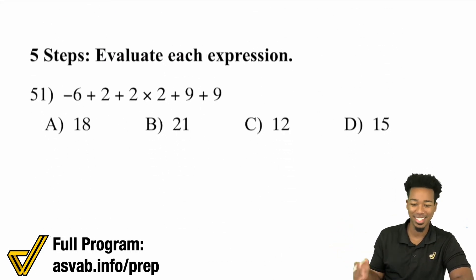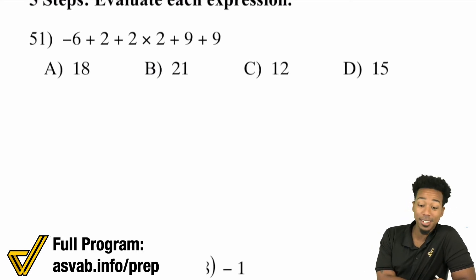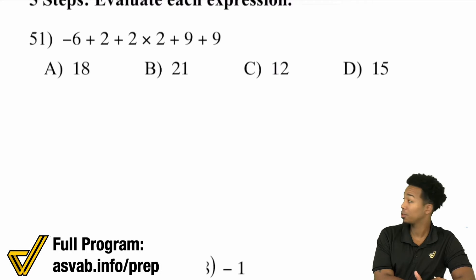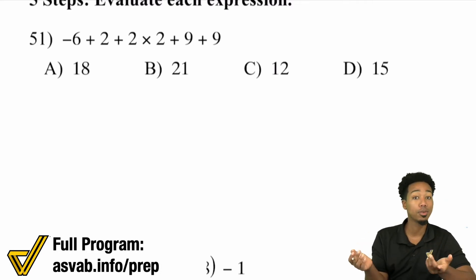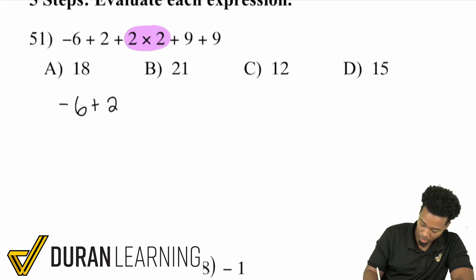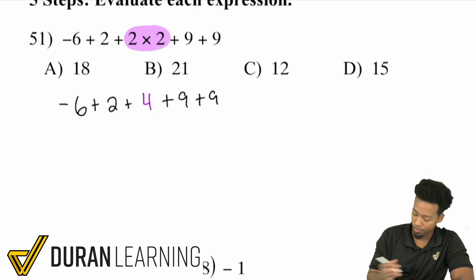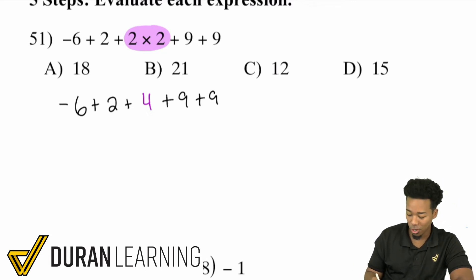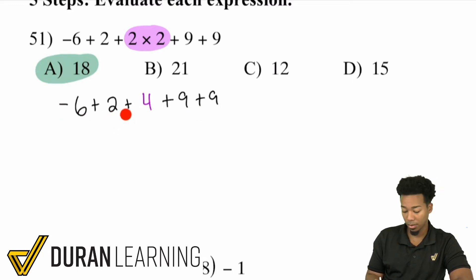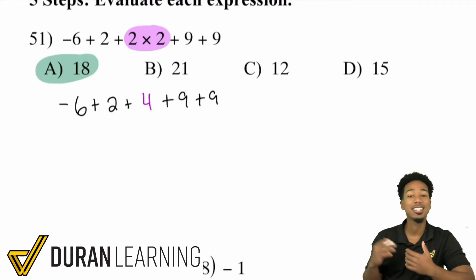Now for true five-step problems. Problem 51: negative 6 plus 2 plus 2 times 2 plus 9 plus 9. No grouping or exponents here, so go to multiplication and division first — the only multiplication is 2 times 2, which is 4. Rewrite: negative 6 plus 2 plus 4 plus 9 plus 9. Then just go left to right. You can also rearrange: 9 plus 9 is 18, plus 2 is 20, plus 4 is 24, minus 6 is 18.